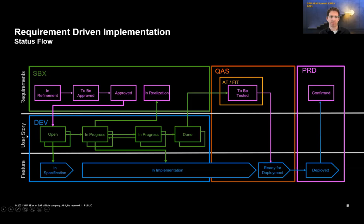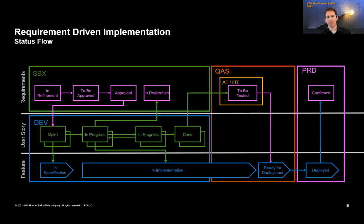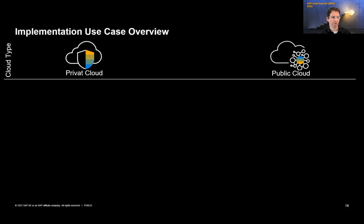All these entities — requirement, user story, and feature — are loosely coupled entities controlled via our analytics views, and together you can build this end-to-end process as shown by Rainer. Thinking to the future, where we could potentially add a workflow service on top, you could think about automation and putting constraints in to automatically switch statuses of different entities. Having these loosely coupled entities also gives you full flexibility — this end-to-end process is not the only way you can work in Cloud ALM.